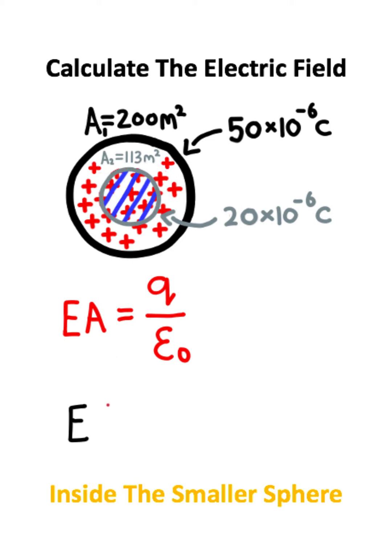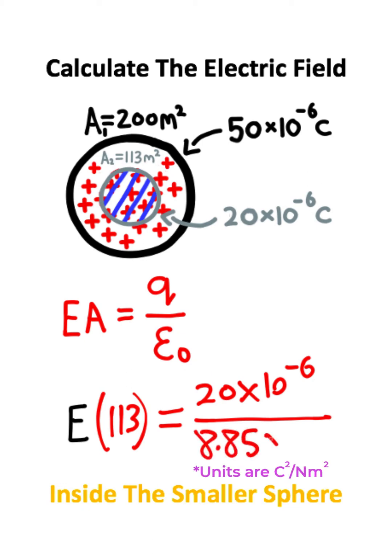I'll plug in all the numbers for the smaller sphere. The small sphere has a surface area of 113 square meters. The charge enclosed is 20×10^-6 coulombs. Then I divide by the permittivity of free space, which is 8.85×10^-12.